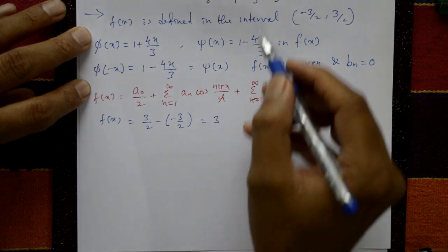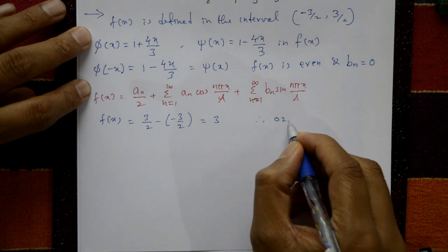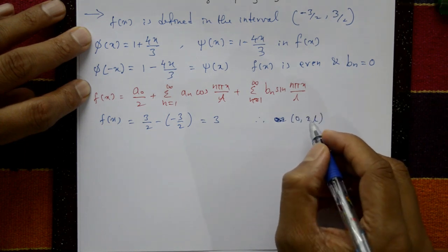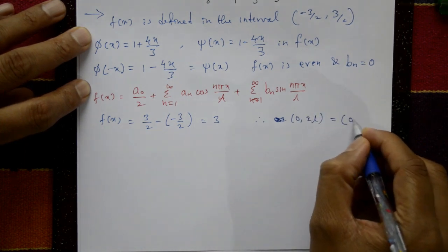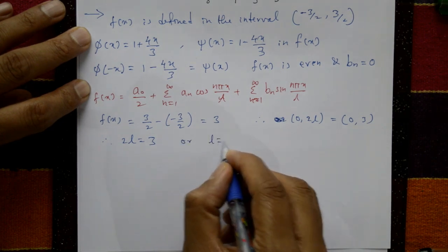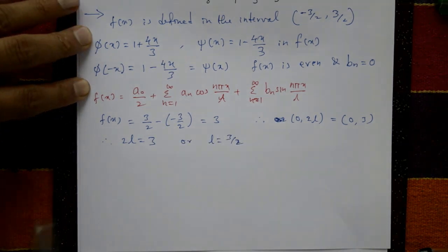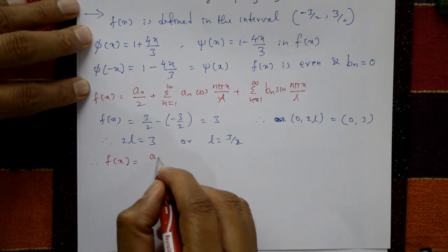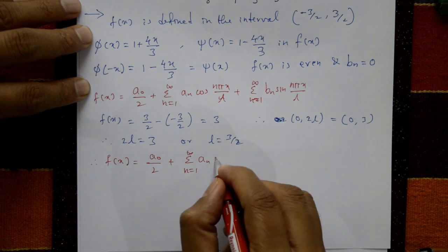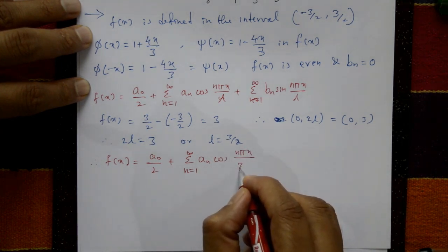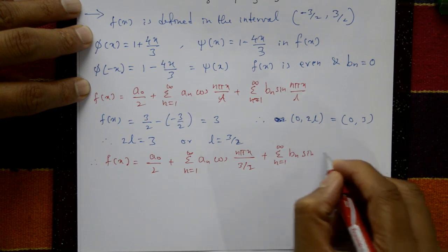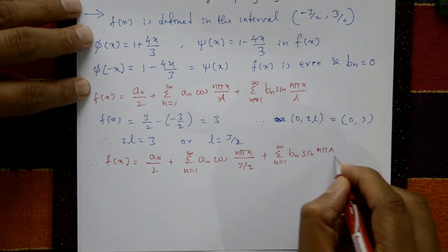The period 0 to 2l equals 3, therefore 2l = 3 and l = 3/2. Substituting l = 3/2, f(x) = a₀/2 + Σ aₙ cos(nπx / (3/2)) + Σ bₙ sin(nπx / (3/2)). This is equation number 1.